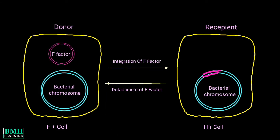The F factor can exist independent of the host chromosome, or it may become integrated into it. The bacterial cell in which the factor is integrated into the chromosome is called an HFR, that is, high frequency recombination cell. The F factor integration causes a relatively very frequent transfer of the bacterial chromosome from the donor into the recipient cell, resulting in a high frequency of recombination.